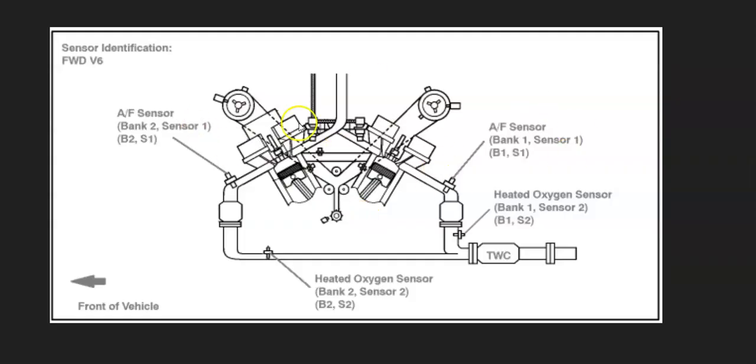It's always a good idea to get a diagram of where all the oxygen sensors are laid out on your particular Toyota. It just makes it easier to know exactly where they are and how many there are.